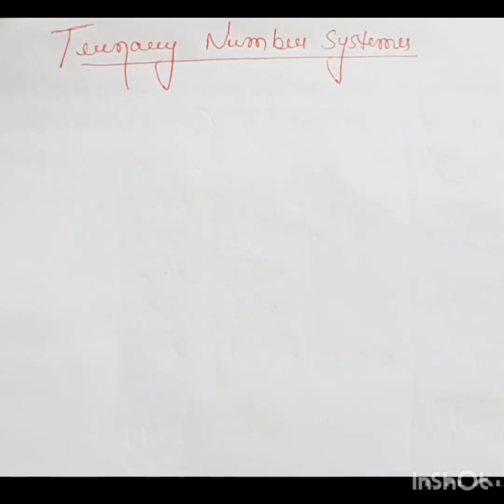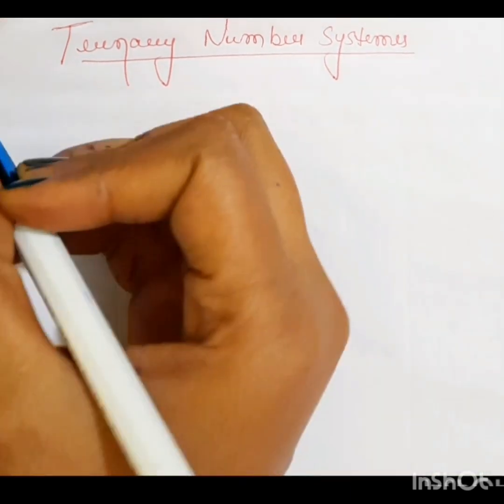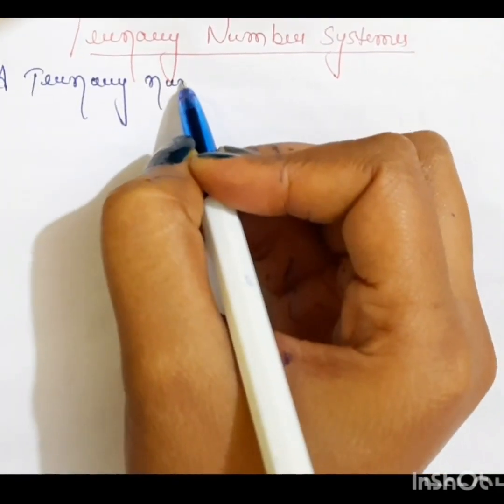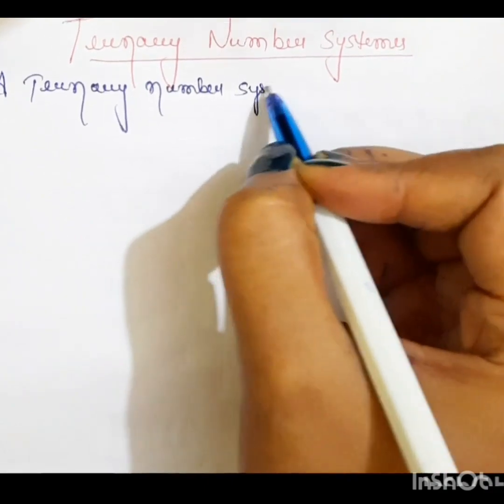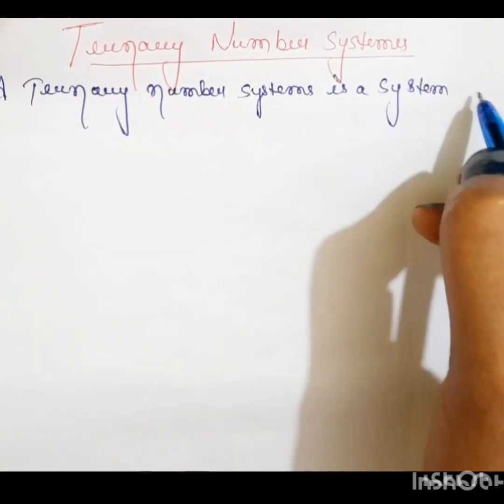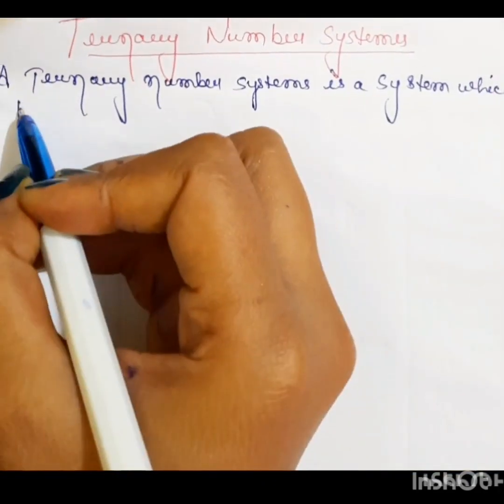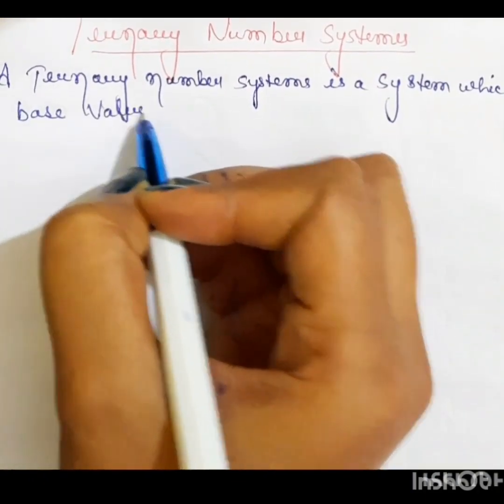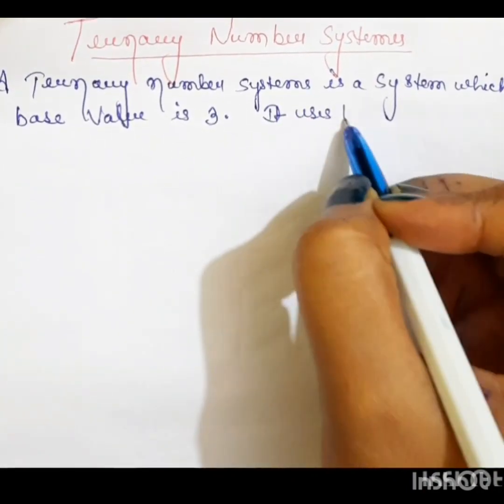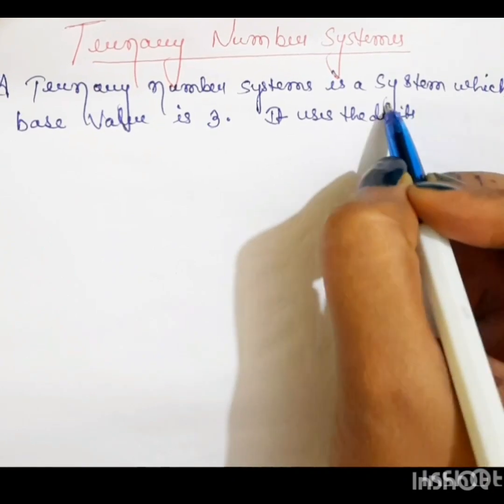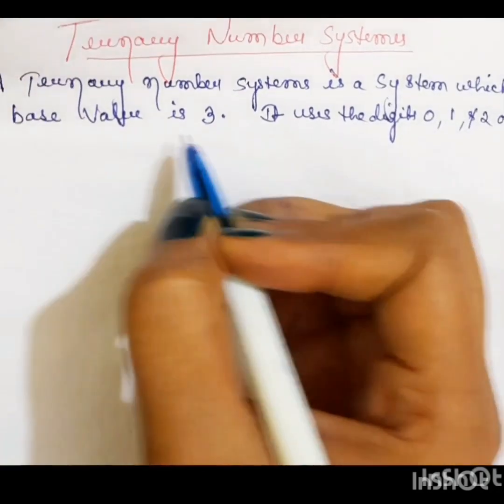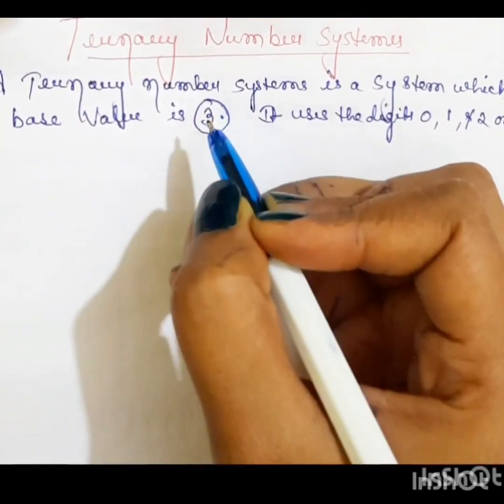First of all, we know that what is trinary number system? A trinary number system is a system which base value is 3. It uses the digits 0, 1 and 2 only. It's base value is 3. Means trinary number system.